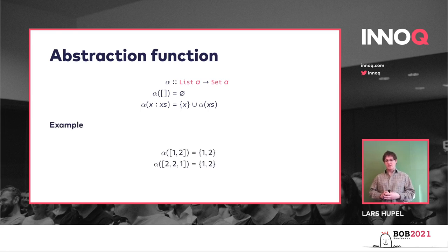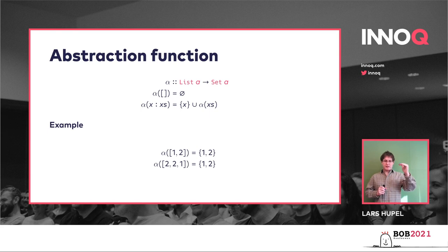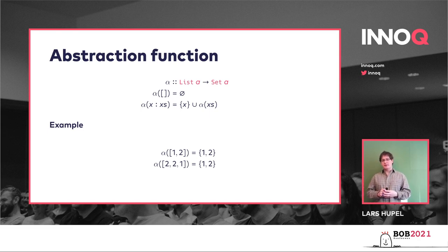Keep in mind that you have a list of a, which is a concrete Haskell thing, and then the set of a in the signature is an abstract concept. If we call alpha on list [1,2], we get the mathematical set {1,2} back. And if we flip around the order or add duplicate elements in the list, we get the exact same set back — because in a set there's no particular order and elements cannot be duplicated. So different lists can map to the same abstraction.